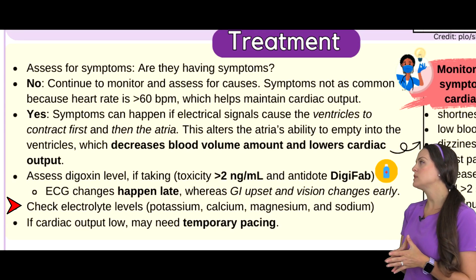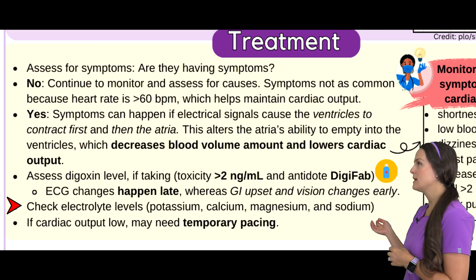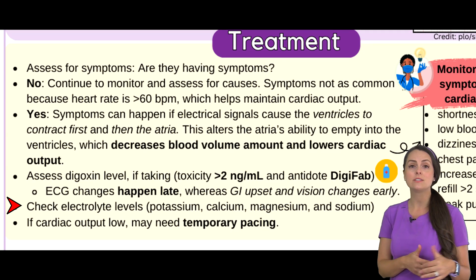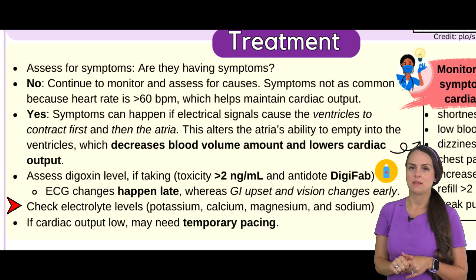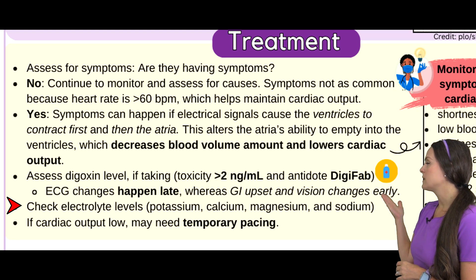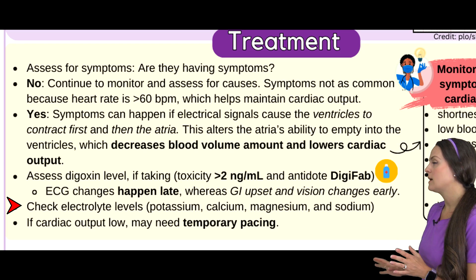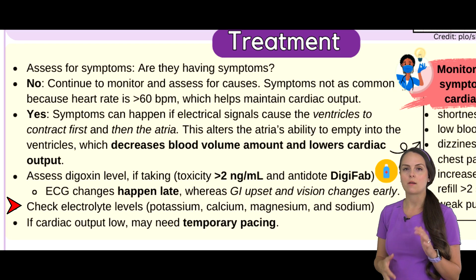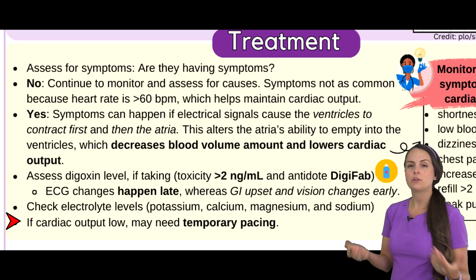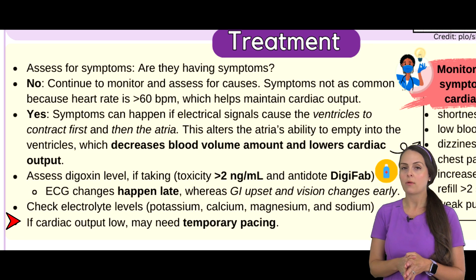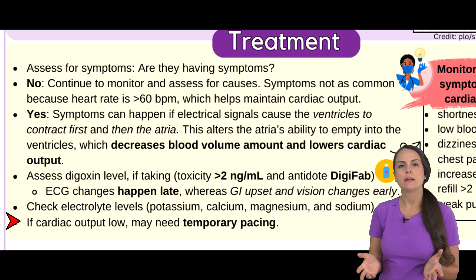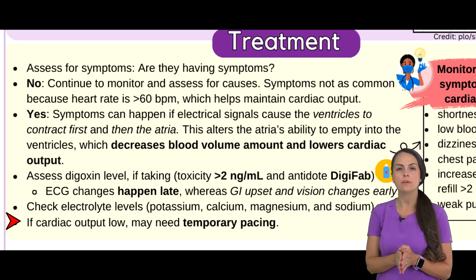We also want to be looking at electrolyte levels, because an alteration or imbalance in electrolytes can lead to accelerated junctional rhythm. Check their latest potassium level — both increased and decreased potassium could lead to accelerated junctional — as well as imbalances with calcium, magnesium, and sodium, since all these electrolytes play a role in muscle contraction and other functions. If the patient is presenting with signs and symptoms of decreased cardiac output, you want to prep them for temporary pacing, which will help improve cardiac output until further treatment can be provided.